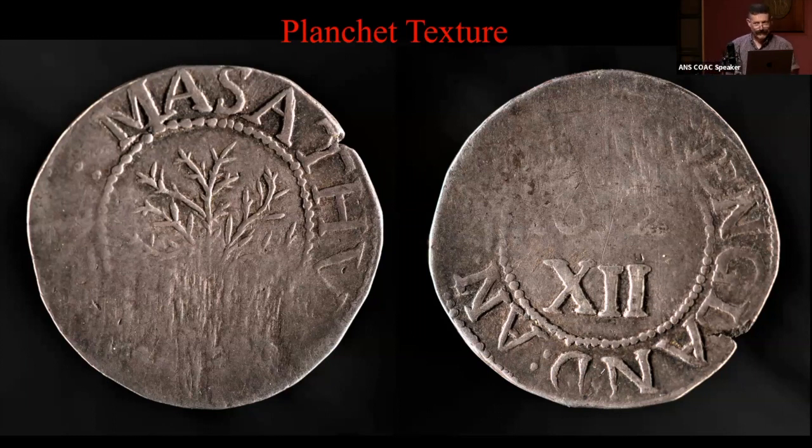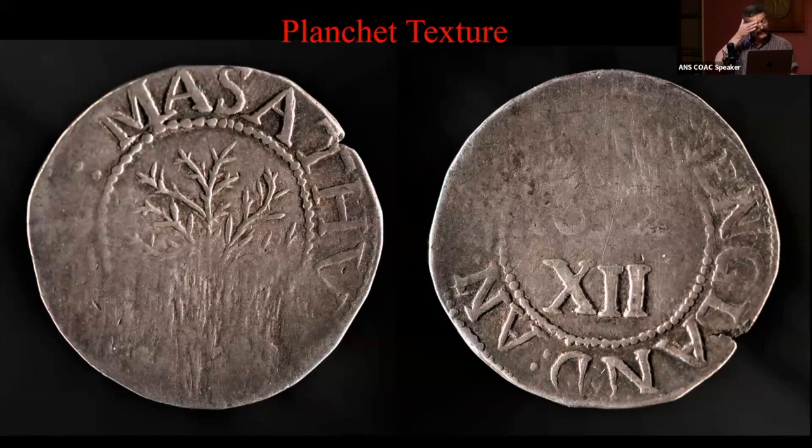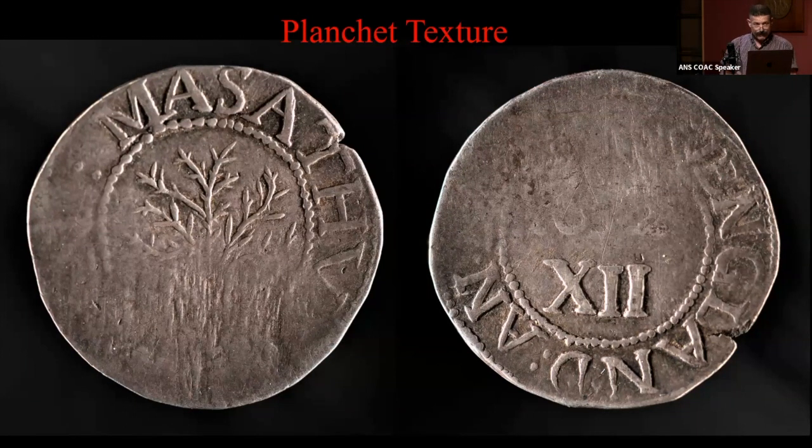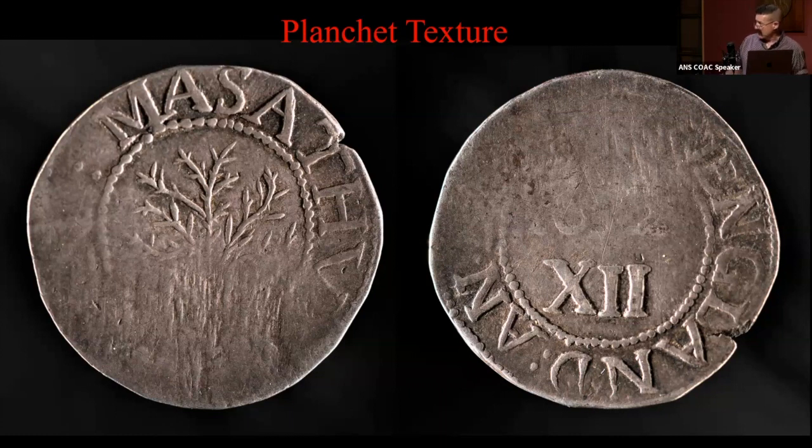It wasn't cheap. This is essentially half of a coin on a full planchet. But what it is to me is an amazing document, because right here, this unstruck area shows me the texture of what a blank Massachusetts mint planchet looked like.